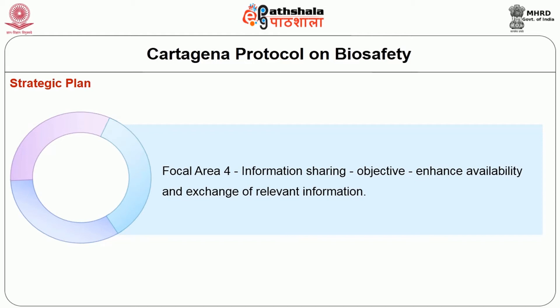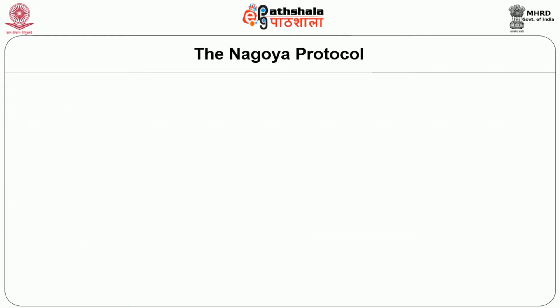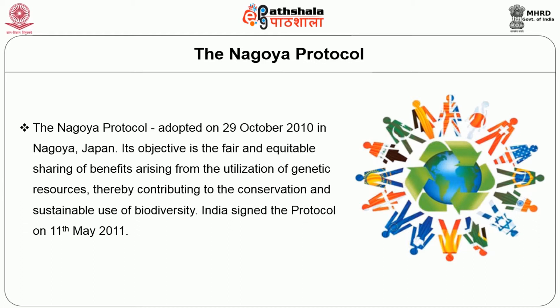Apart from the Cartagena Protocol, another protocol was devised called the Nagoya Protocol. It was adopted on 29 October 2010 in Nagoya, Japan. The Nagoya Protocol provides access to genetic resources and is a protocol on access to genetic resources and the fair and equitable sharing of benefits arising from their utilization under the Convention on Biological Diversity. It is an international agreement whose objective is the fair and equitable sharing of benefits arising from the utilization of genetic resources, thereby contributing to the conservation and sustainable use of biodiversity.